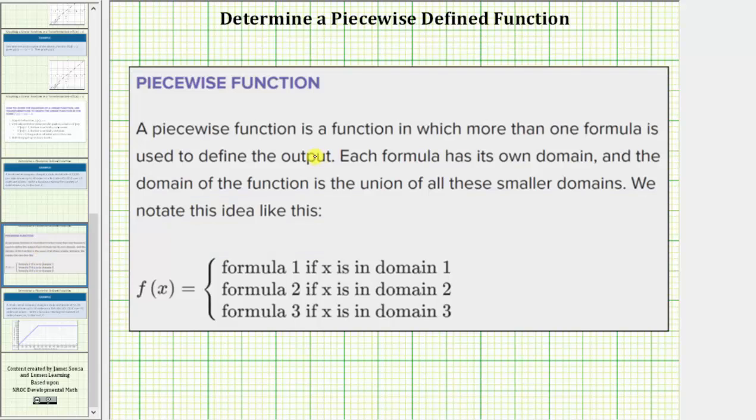A piecewise function is a function in which more than one formula is used to define the output or function value. Each function has its own domain, where the domain is a set of all possible inputs and the domain of the function is a union of all these smaller domains. We notate this idea as shown below, where we have the function f of x equals various formulas if the input variable x is in a particular domain.